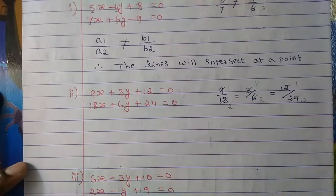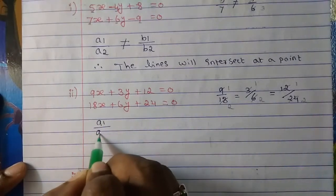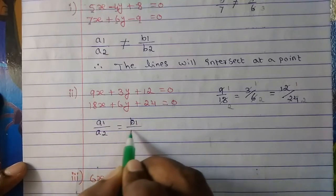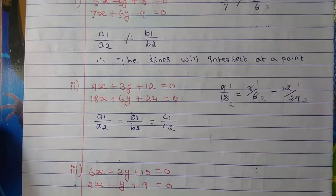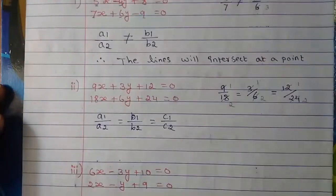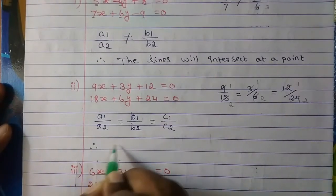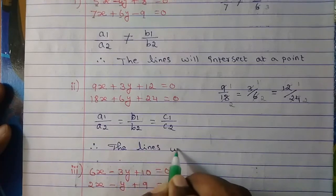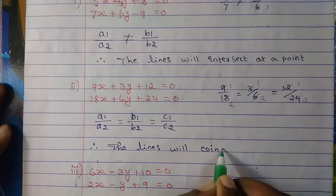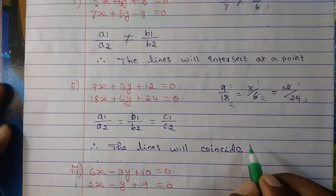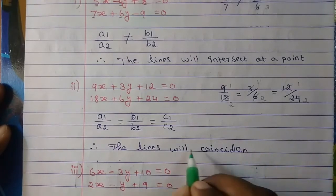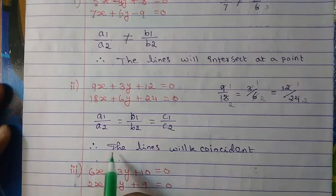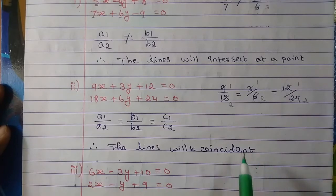So all are equal. In this condition, you can write: a1 upon a2 is equal to b1 upon b2, which is equal to c1 upon c2. Since all are same, the lines will be coincident. You can write coincide or coincident — either way is fine.